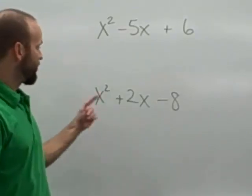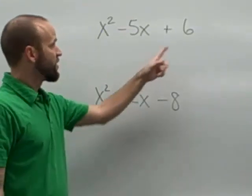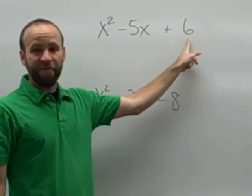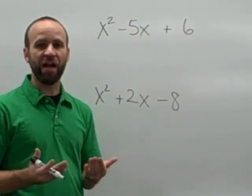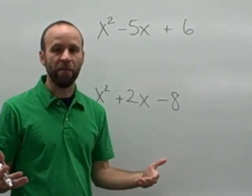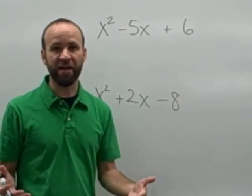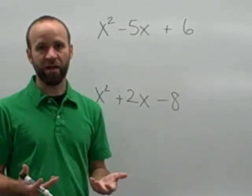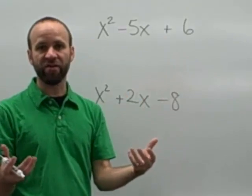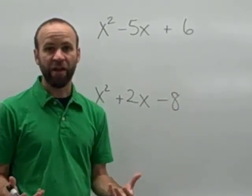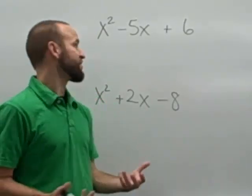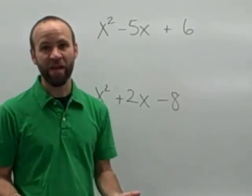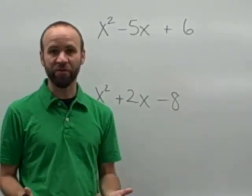So let's try that a couple more times. Both of these trinomials have a leading coefficient of 1. On this first one, we are looking for factors of positive 6 whose sum is negative 5. If we have factors of positive 6, we know there are two possibilities: we've either multiplied two positive numbers together, or maybe two negative numbers together to get a positive 6. Because we want the sum to be negative, we know we're looking for two negative numbers. So really our only choices are negative 1 and negative 6, or negative 2 and negative 3. Only one of those adds up to negative 5 — negative 2 and negative 3.